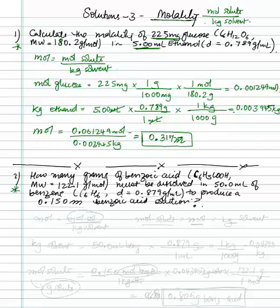Let's do another kind over here. How many grams of benzoic acid, which is C6H5OH, the molecular weight is given to us, must be dissolved in 50 milliliters of benzene, C6H6. And the density is given to us, 0.879 grams, to produce a 0.15 molal benzoic acid solution. So again, remember...